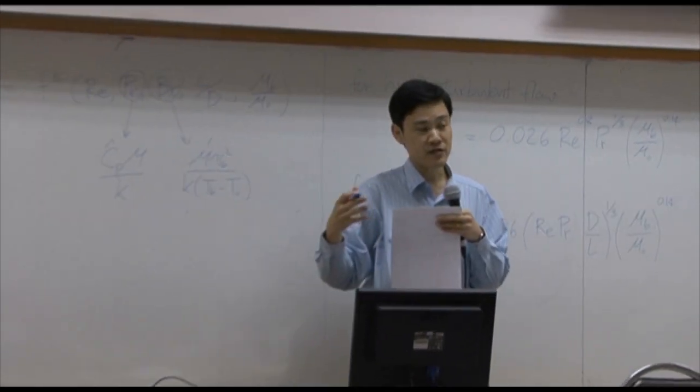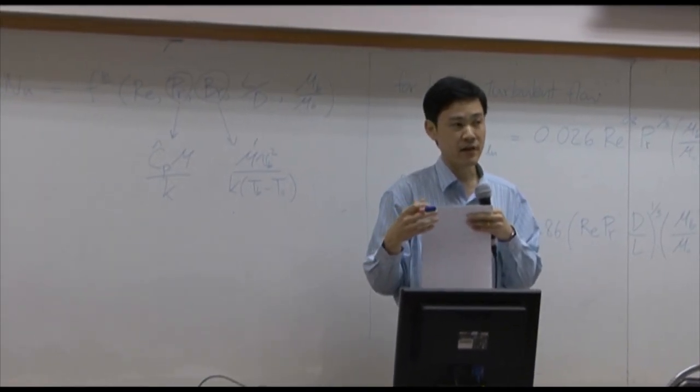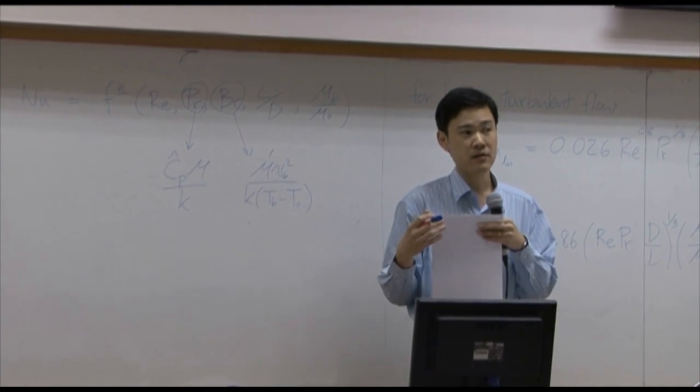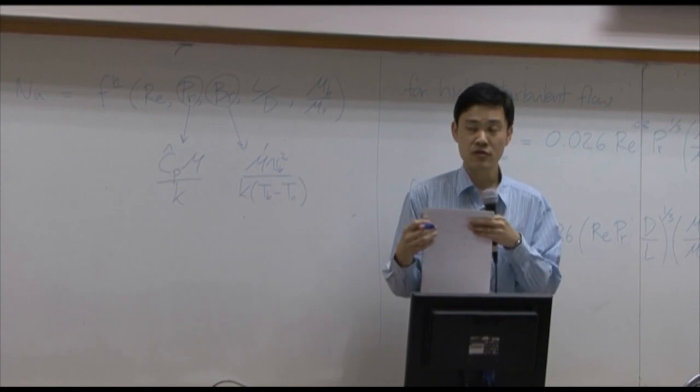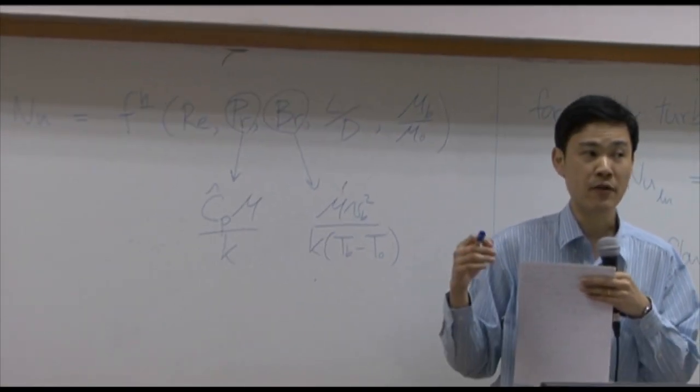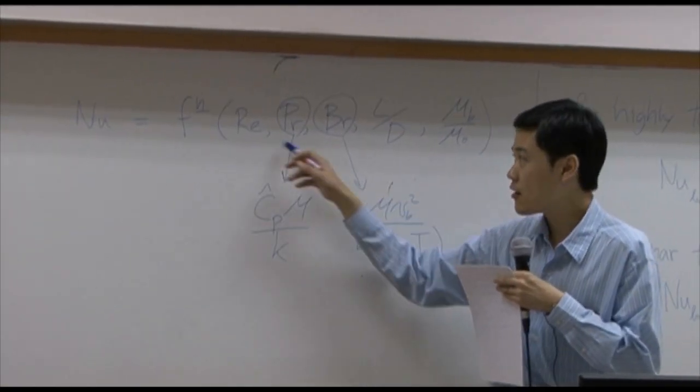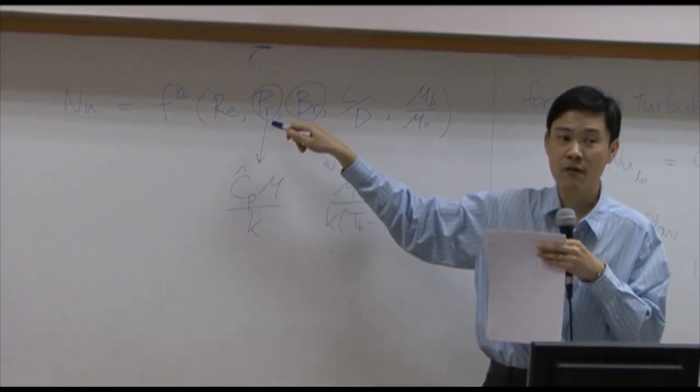Because the faster the flow you have in the pipe, the better the heat transfer by convection. So it would be definitely a function of Reynolds number. It is also a function of Prandtl number.